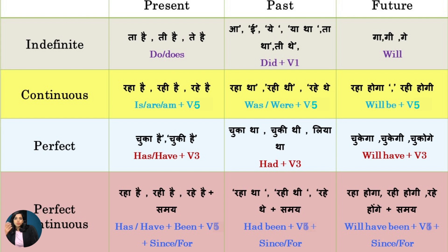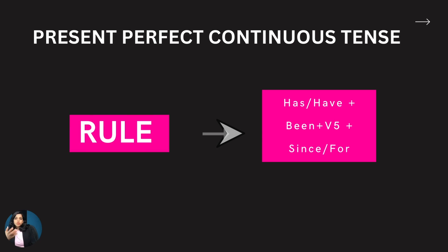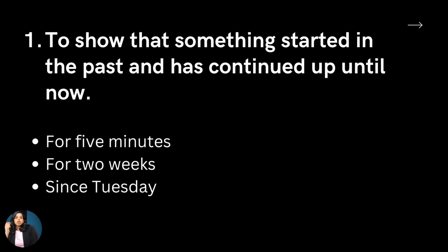Looking at the Hindi tense chart: ta hai, ti hai, te hain is present indefinite; ga, gi, ge or ya is future; tha, thi, the is past simple. In continuous tense: raha, rahi, rahe. In perfect tense: chuka, chuki, chuke. In perfect continuous tense: time is mentioned along with raha, rahi, rahe. The rule for present perfect continuous is: has or have plus been plus verb's first form plus -ing and since or for.